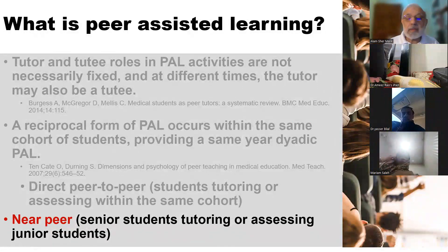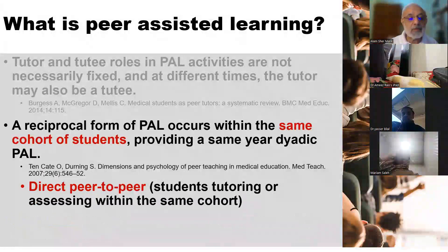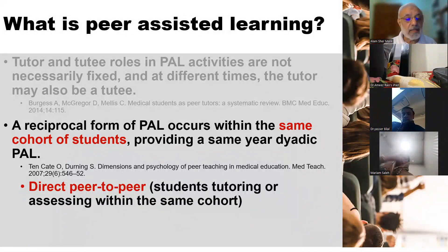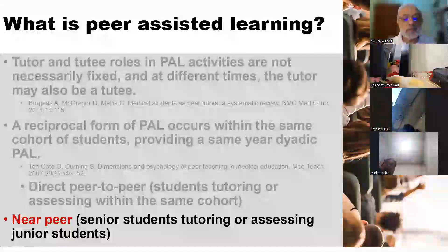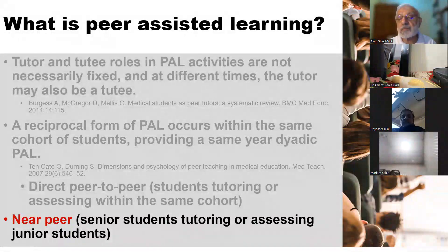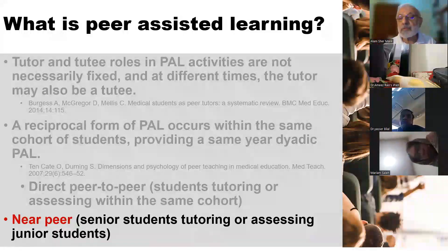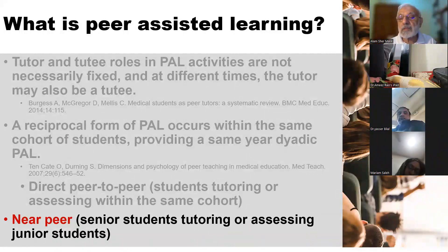So there are two approaches: direct peer-to-peer, which involves students from the same cohort or same class; and near-peer, where students come from two different classes — maybe senior and junior, such as year four and year three, or year five and year three.